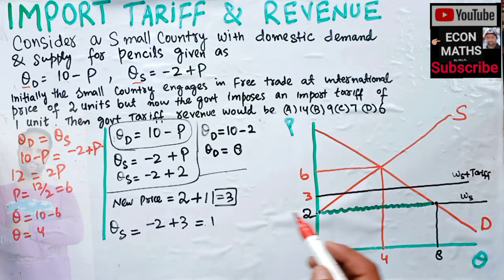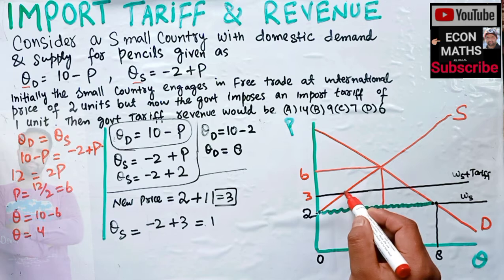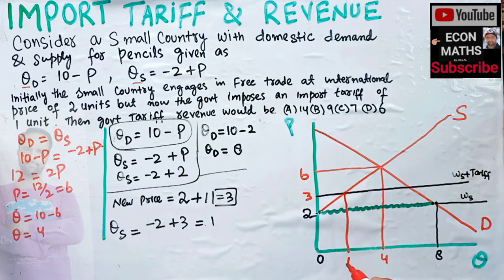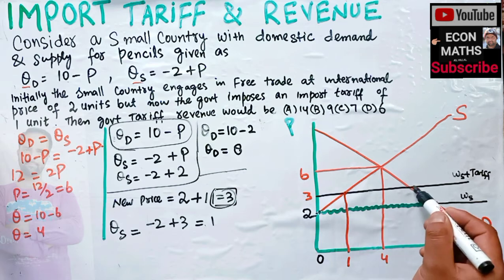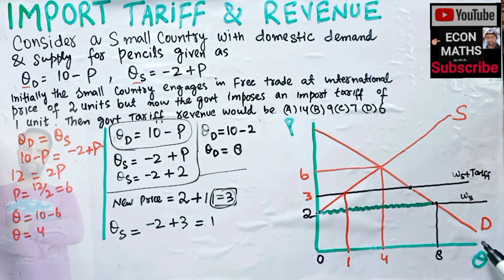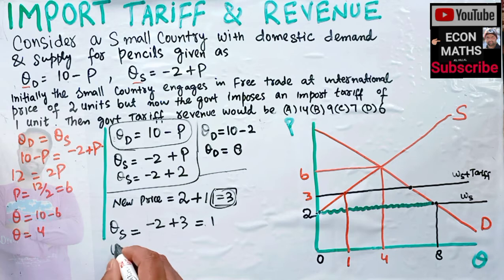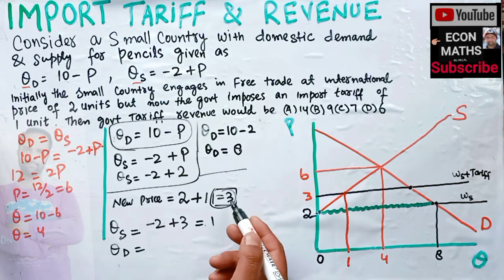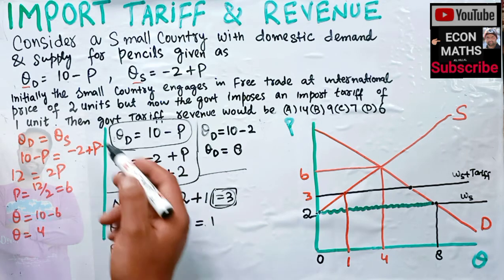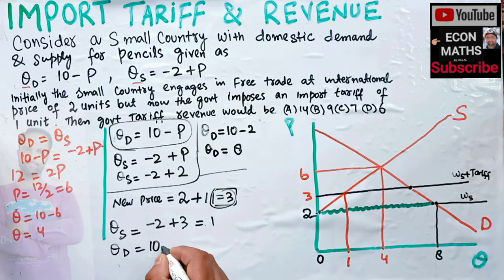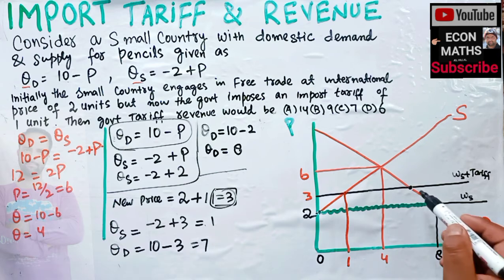At this new price of three, domestic quantity supplied = -2 + 3 = 1. So domestic supply is equal to 1. And corresponding to this new price, domestic quantity demanded = 10 - 3 = 7.